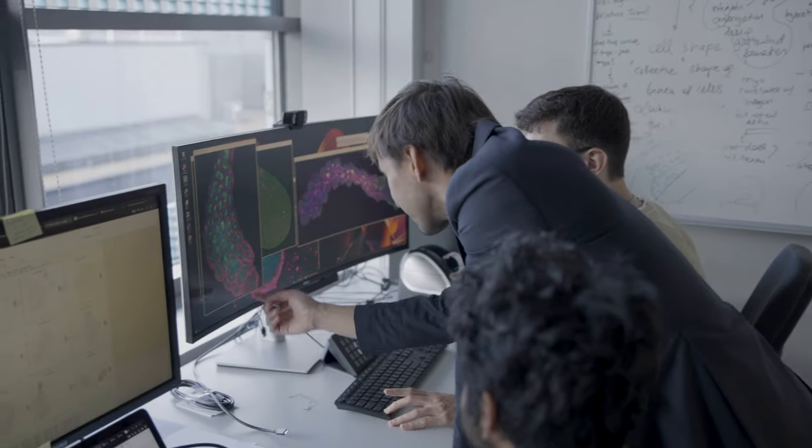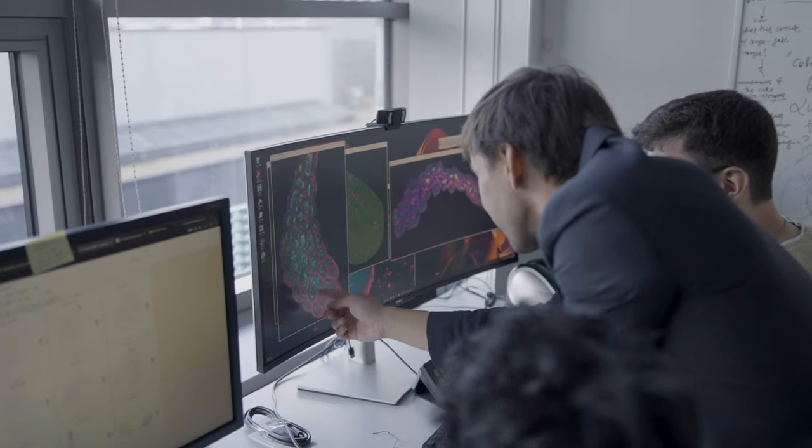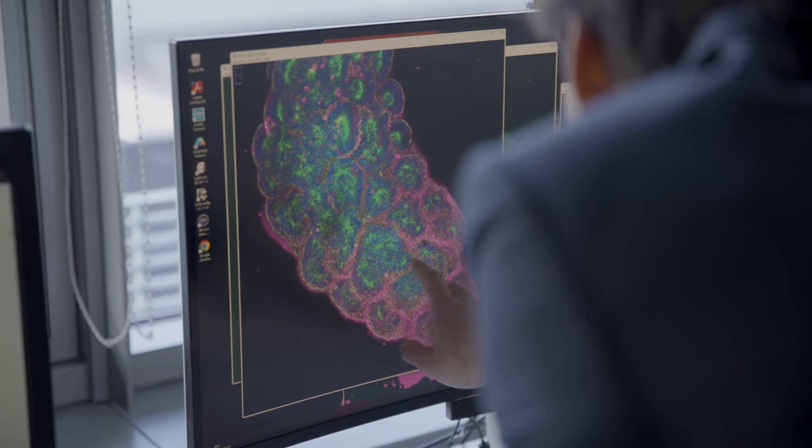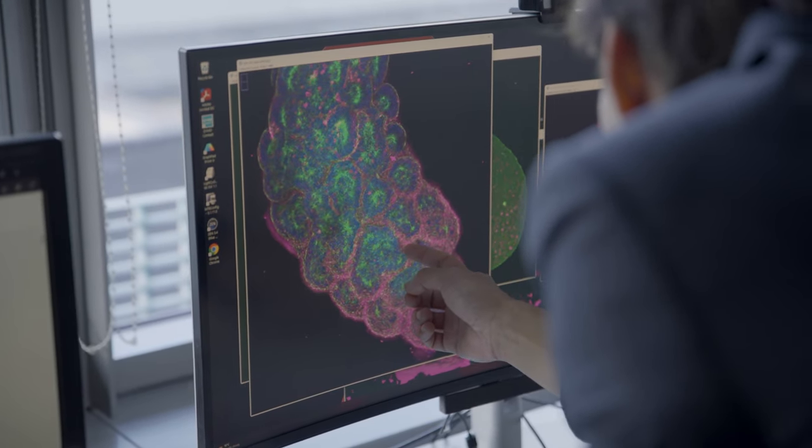If you take embryonic stem cell aggregates and you subject them to the right culture conditions, they have this amazing capacity to self-organize into so-called gastroloids. What I discovered is that you can supplement these gastroloids with an extracellular matrix compound, and this now unlocks embryo-like architecture.